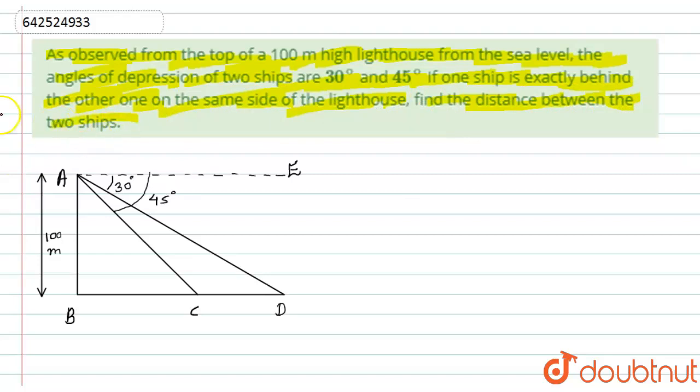So let's start with the solution. First of all, what is given to us is that there is a lighthouse. So let AB be the lighthouse whose height is given to us as 100 meters, and there are two ships. So let C and D are the two ships.